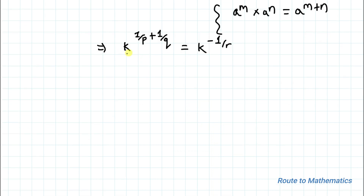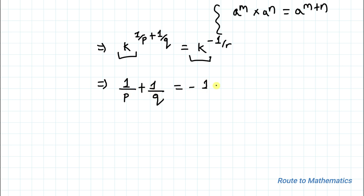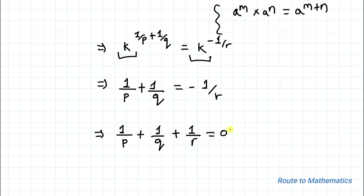Since both sides have the same base k, we can directly equate the exponents. So we write 1/p + 1/q = −1/r. Bringing −1/r to the left-hand side gives us 1/p + 1/q + 1/r = 0.